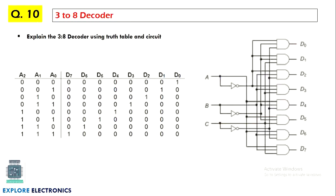The last question is a 3-to-8 decoder: 3 inputs and 8 outputs. The inputs range from 0-0-0 to 1-1-1, all combinations are listed. For each input combination, the output is decoded — for example, 0-0-0 gives output 0-0-0-0-0-0-0-1, and so on up to 1-1-1. We need to write the expressions for outputs D0 through D7 by identifying where each output is 1. The circuit is implemented using basic gates. These are the 10 questions we can expect in the examination from this particular chapter. Thank you.